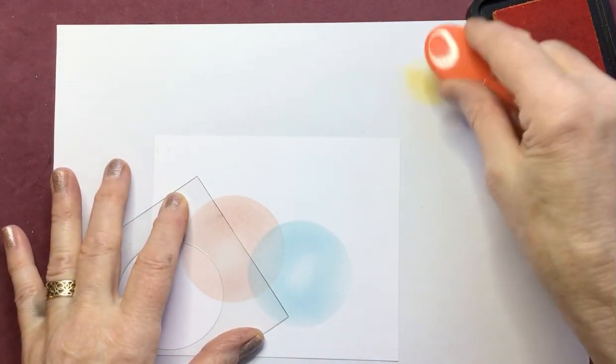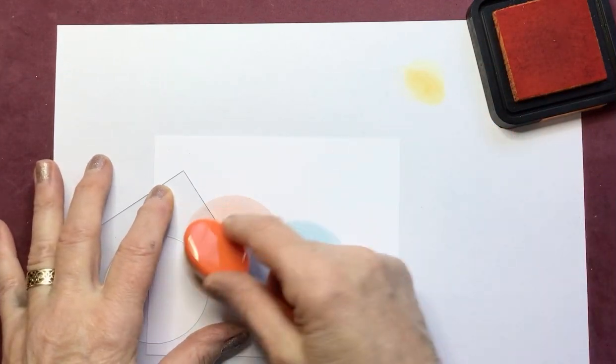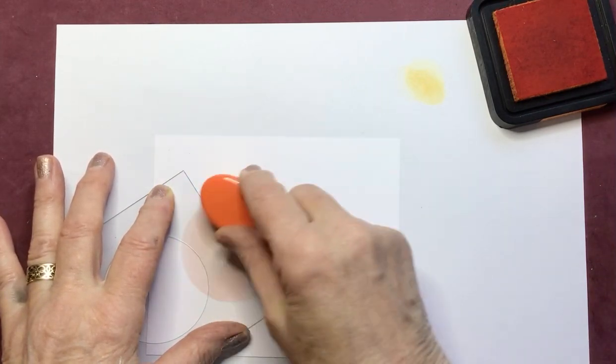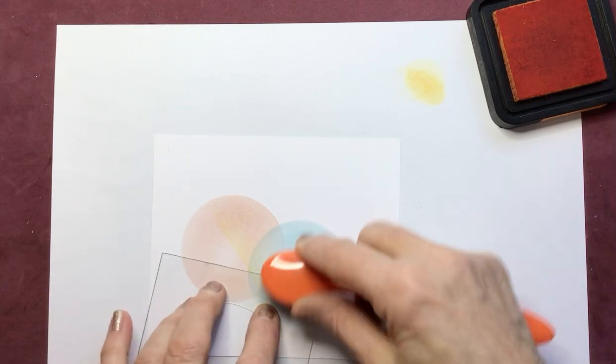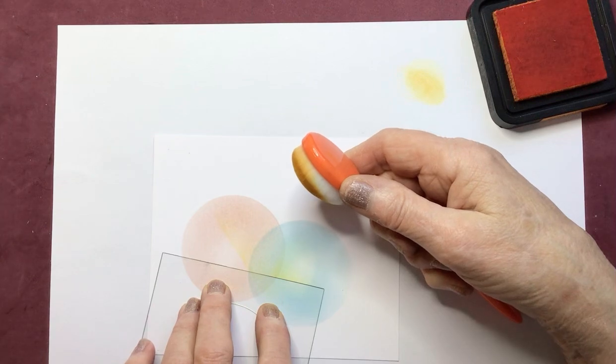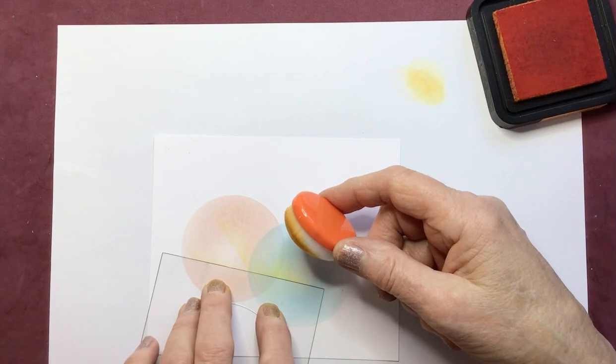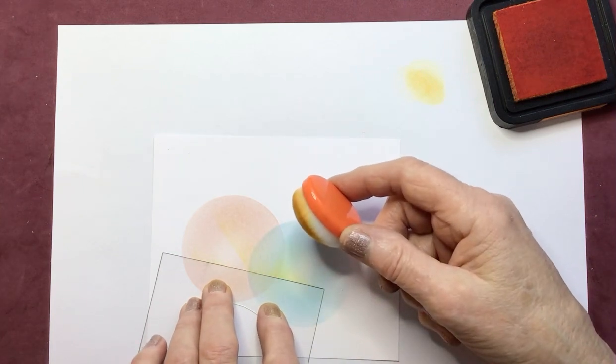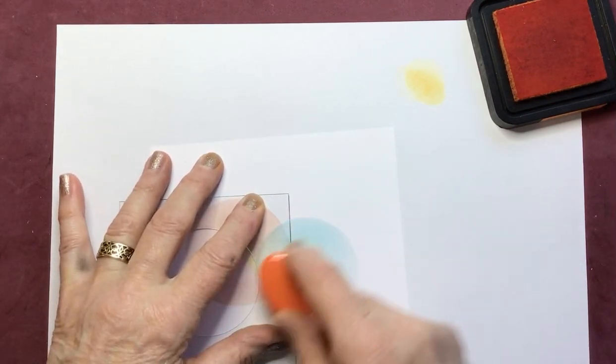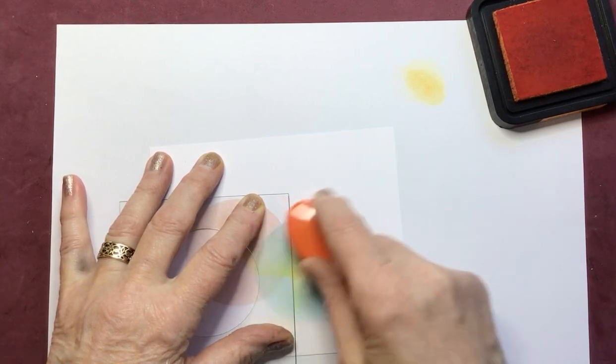I don't really want it overpowering and it's quite a wet pad so just gently, very gently kissing the surface of your cardstock, just putting in a few lines. If you haven't got one you'll need the moon mask to do this so you will have one. It's going to be one of those days isn't it.